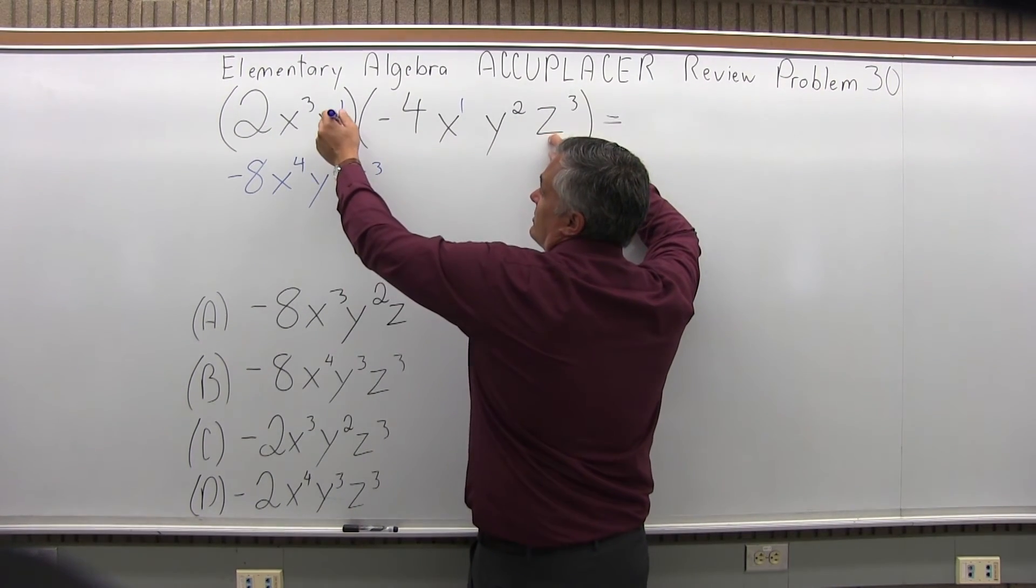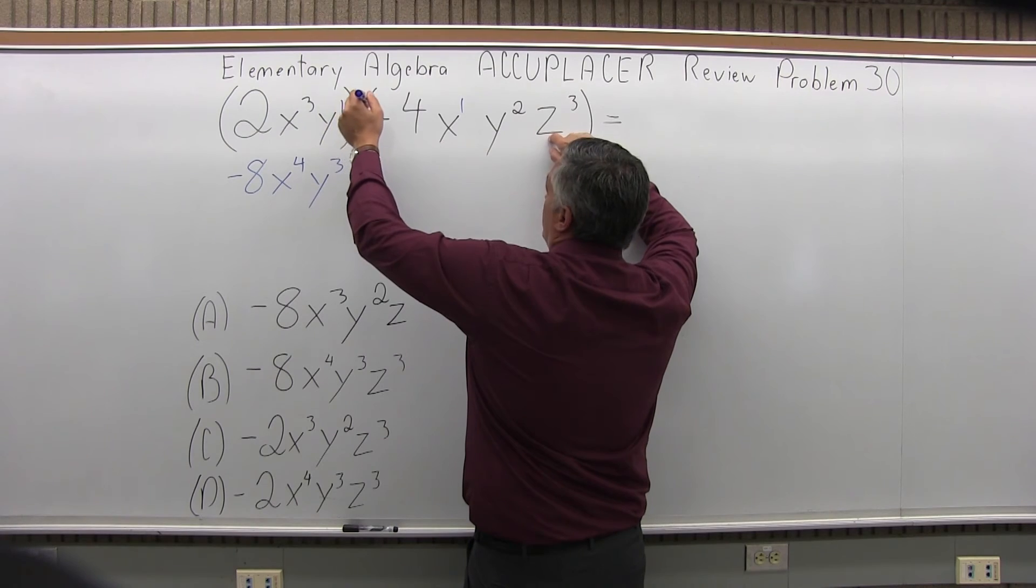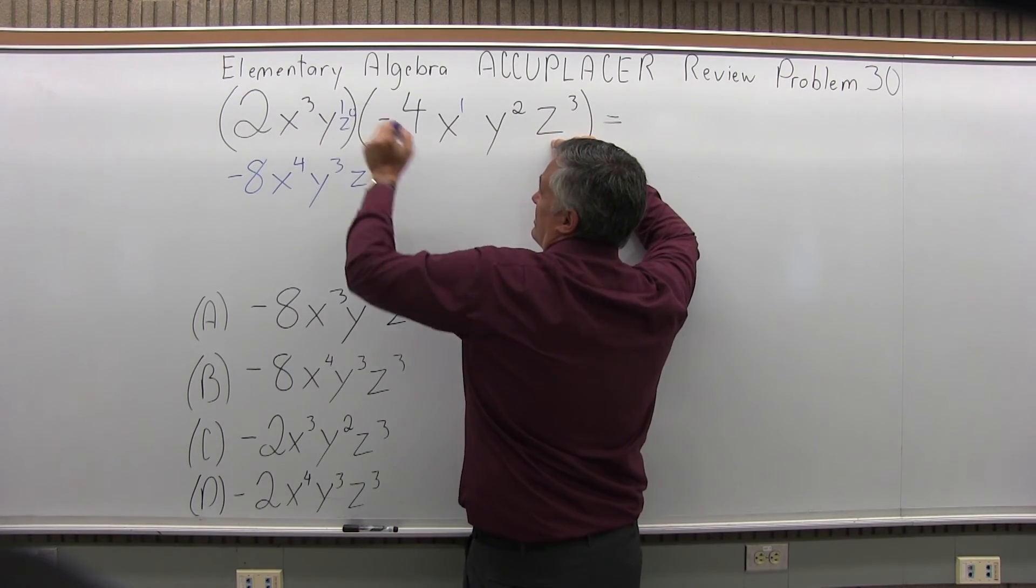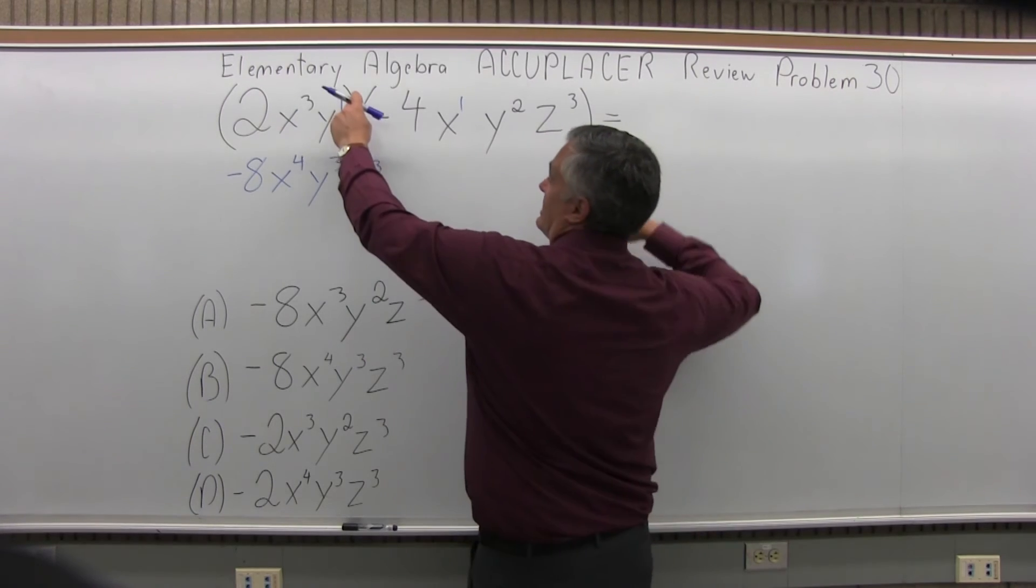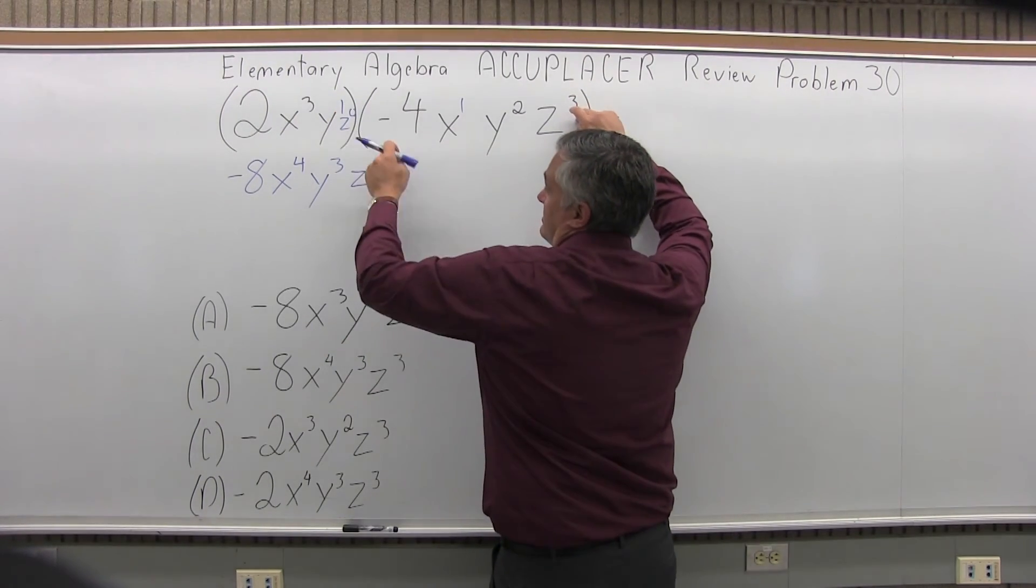To justify it, you could figure that the second set of parentheses has my z³, the first one you can think of actually as a z⁰ if you want. You're still adding exponents, getting 0 plus 3 is 3.